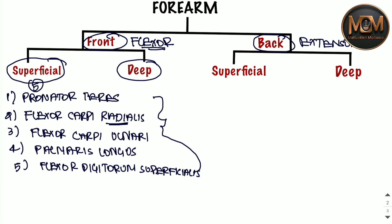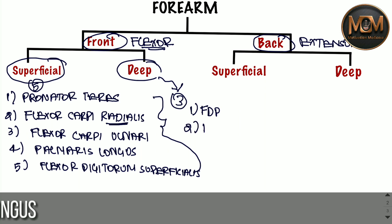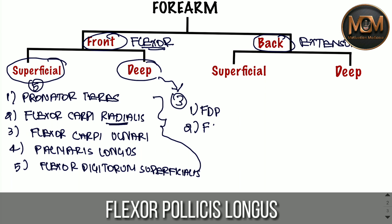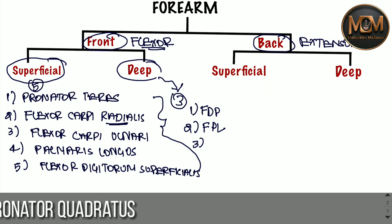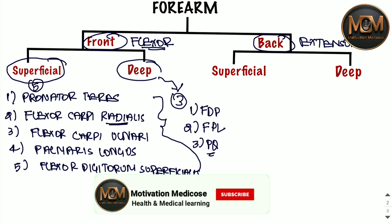Now the deep layer of the front compartment of the forearm has three muscles: the first is flexor digitorum profundus, the second is flexor pollicis longus, and the third is pronator quadratus. Those are the three deep muscles of the anterior forearm.